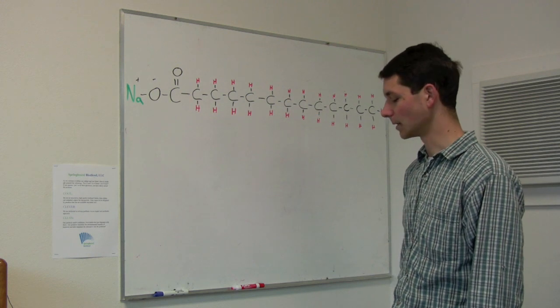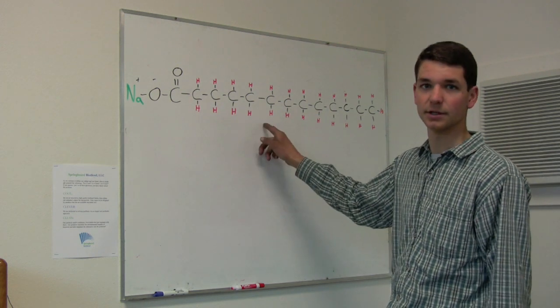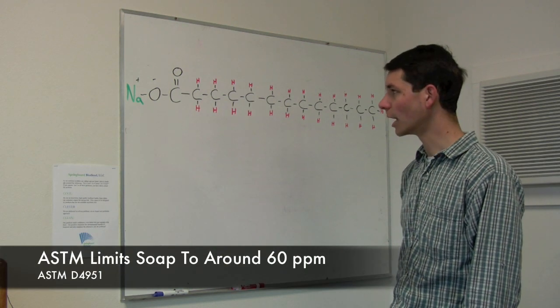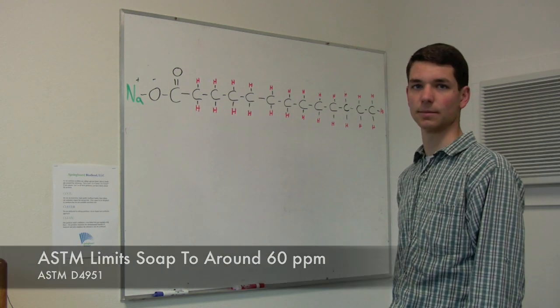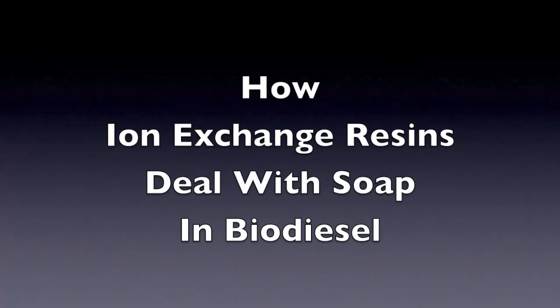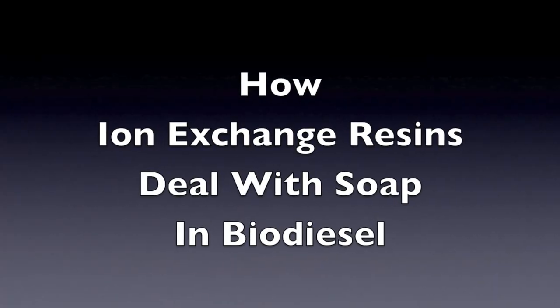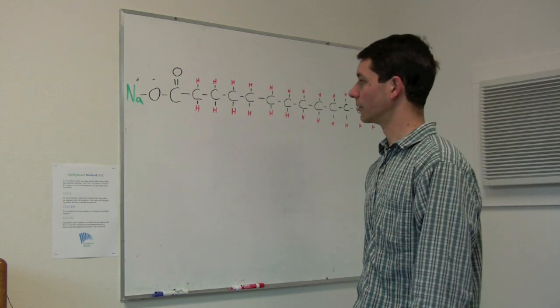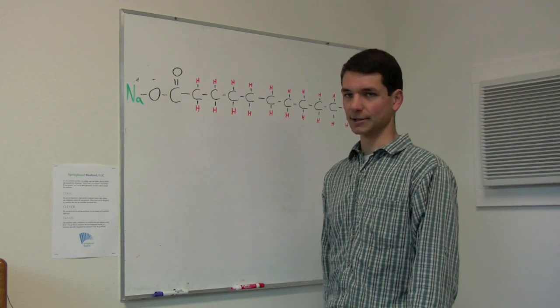Most of the problems with biodiesel can be traced to this molecule. Typical ASTM limits for this run about 60 parts per million - trace amounts that can be very easily removed through an ion exchange resin.